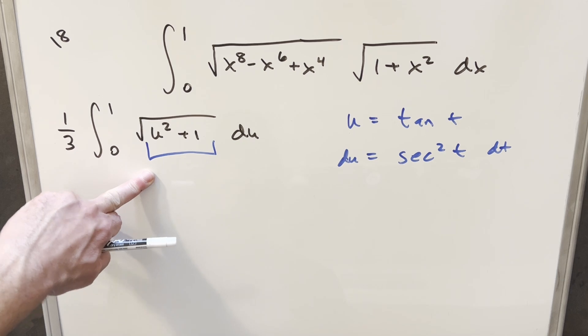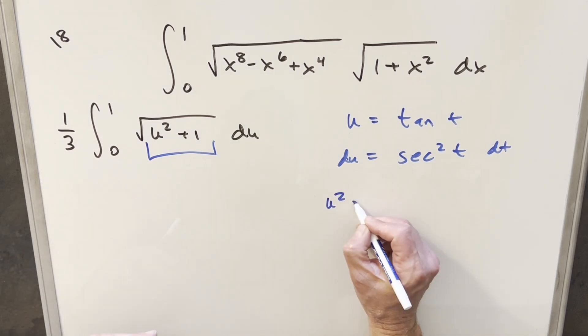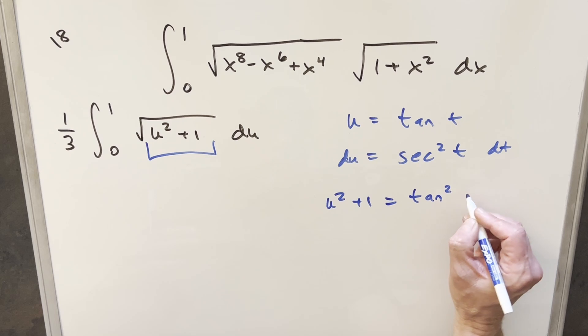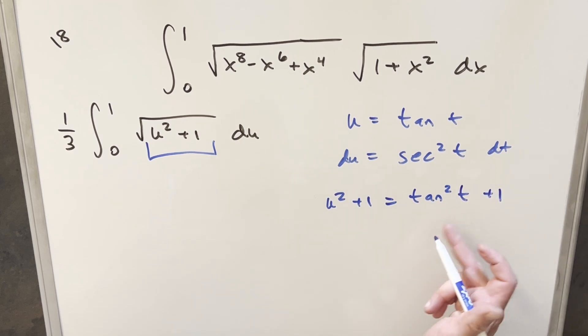I'll take a derivative. So our du value is just going to be secant squared t dt. And while I'm at it, let's just put together the value for u squared plus 1. So u squared plus 1, this is going to become, with the substitution, this will become tan squared t plus 1. But we have a trig identity for that. That's going to be the same thing as secant squared of t.